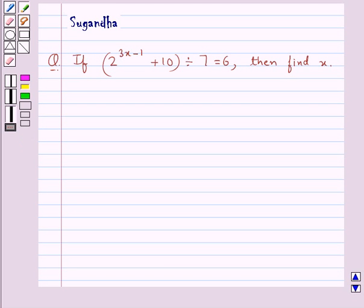Hello and welcome to the session. In this session we discuss the following question which says if 2 to the power 3x minus 1 plus 10, divided by 7, is equal to 6, then find x.